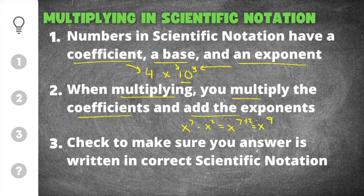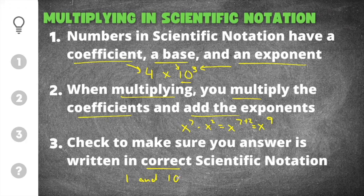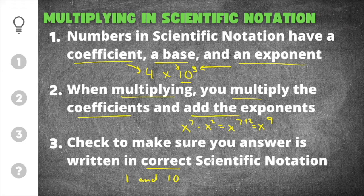After you do that, check to make sure your answer is written in correct scientific notation. The coefficient must be between 1 and 10. If it's less than 1 or greater than 10, you have to move the decimal point and change the exponent to make it correct scientific notation. Once it's in correct scientific notation, that's your answer.